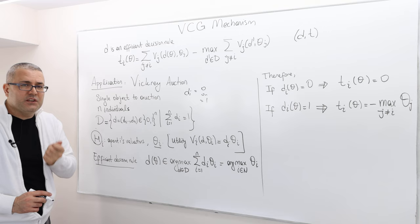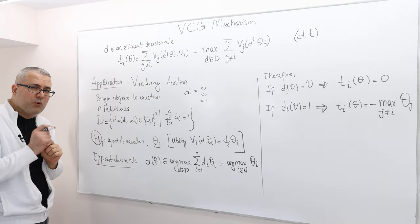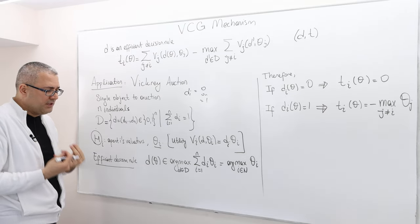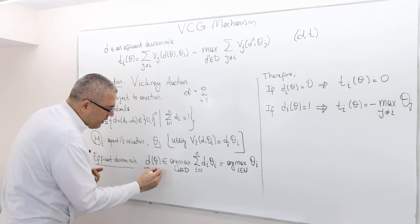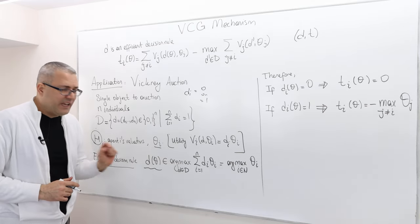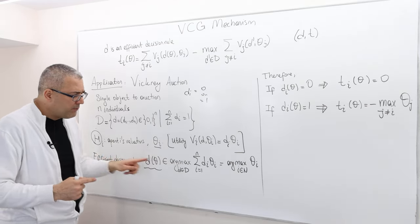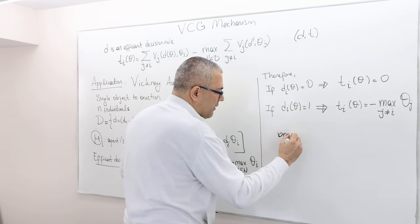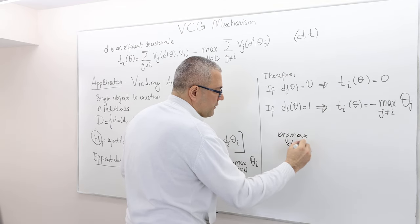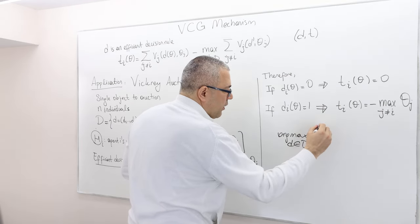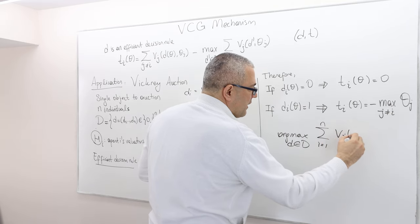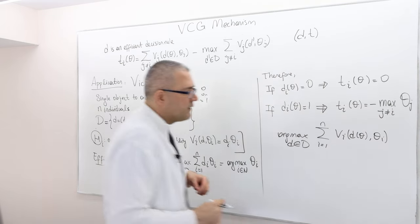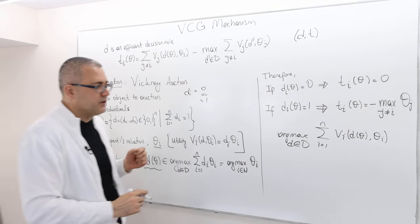What is the efficient decision rule in this auction environment? We denote the efficient decision rule D(Theta), and by definition it is: argmax over D in the decision set of the summation from I=1 to N of V_I(D, Theta_I). This is exactly how we find the optimal decision. And V_I(D, Theta_I) is D_I times Theta_I.